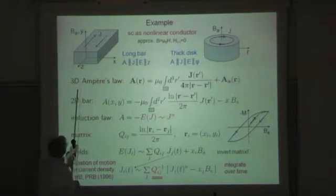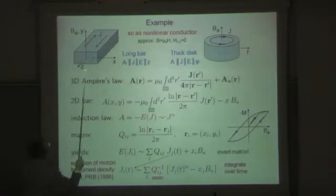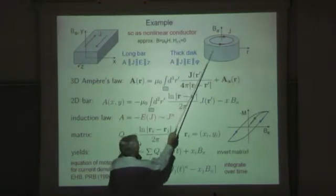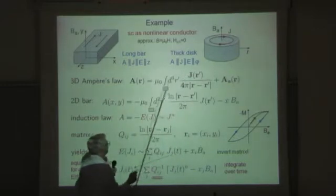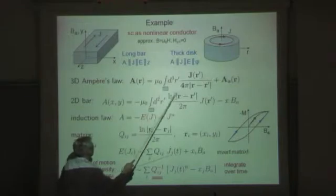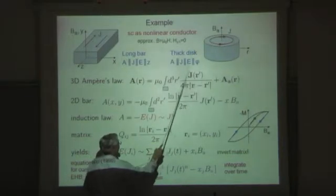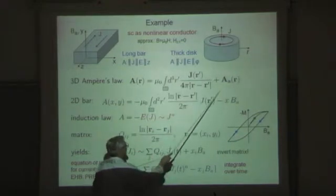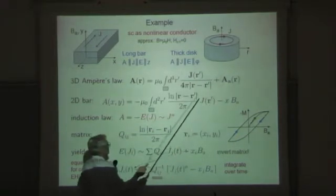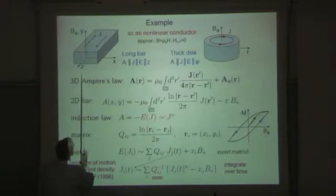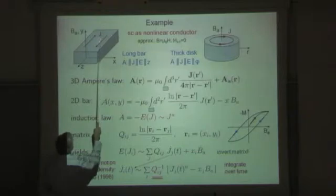Then I did some numerics. I wanted to see what happens when the film becomes thicker. So this is a long strip or bar with finite thickness, or a disc with finite thickness or short cylinder. All this can be calculated. One uses Ampere's law. This is just the inverse of the Laplacian in three dimensions. This is Green's function of the Laplacian operator.